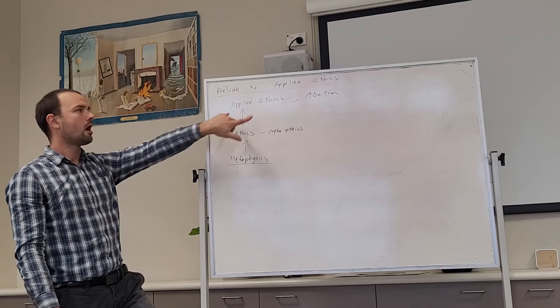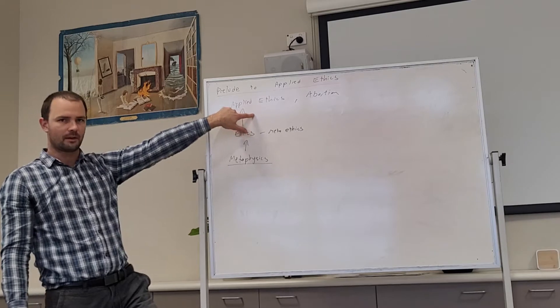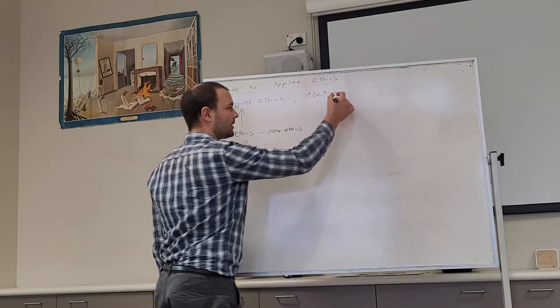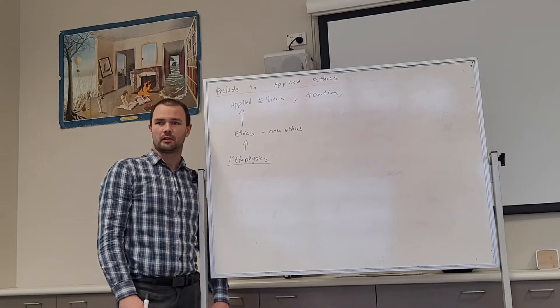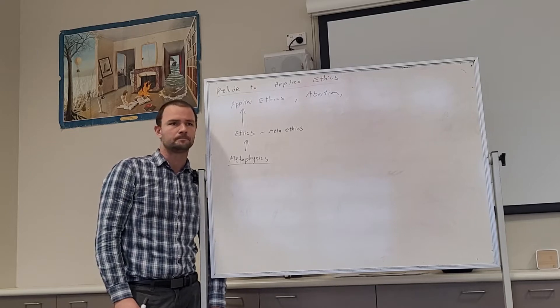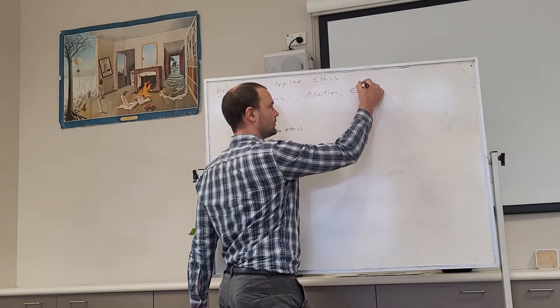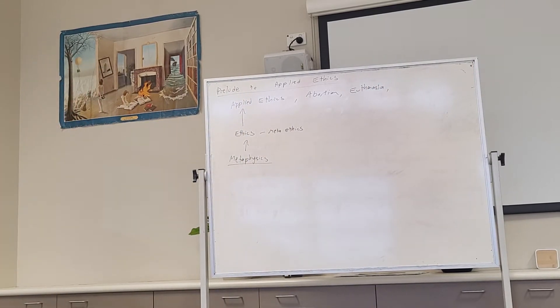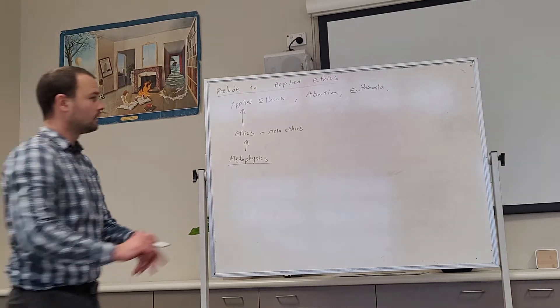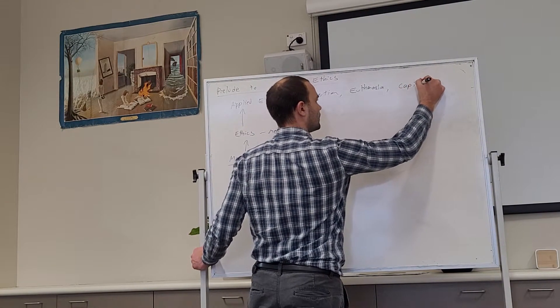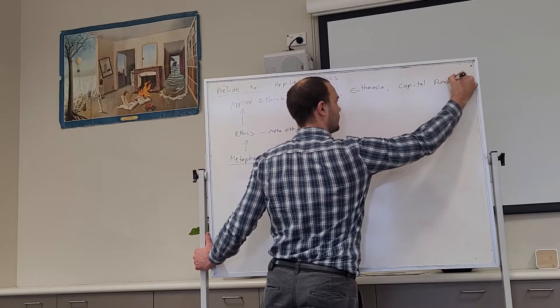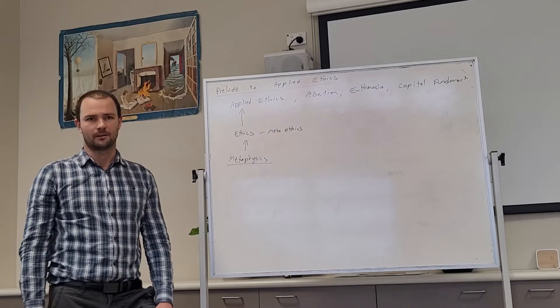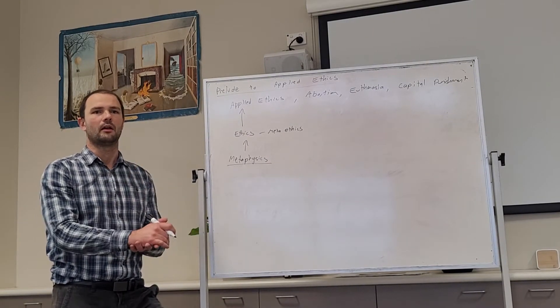And now we're moving on to applied ethics, where we're going to take some of our frameworks and apply them to all manner of issues. So abortion is one. What's another ethical issue that we might have done last year or that you can think of? Euthanasia, very good. What's another one? Death penalty, capital punishment. And all of these are quite good to talk about because they're all the same in one way, that's the ending of a life, but they're all different in another way.